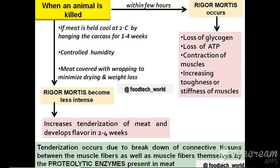The next topic is aging of meat. When an animal is killed, rigor mortis occurs within a few hours. But when meat is kept at 2°C under controlled humidity by hanging the carcass for 1 to 4 weeks, and covered with wrappings to minimize drying and weight loss, the rigor mortis subsides and becomes less intense, resulting in increased tenderization and development of flavors. Tenderization occurs due to the action of proteolytic enzymes, which degrade proteins in connective tissues and muscle fibers — this is natural tenderization.